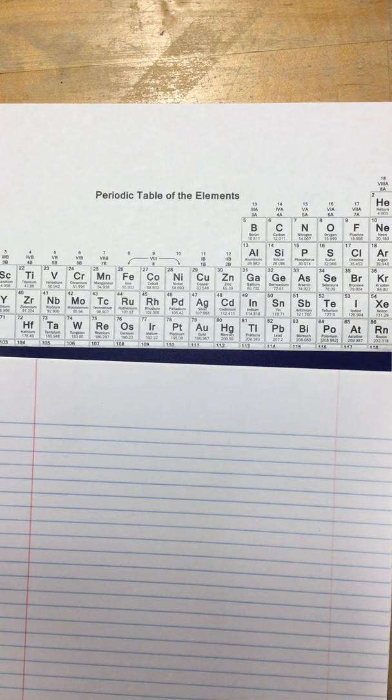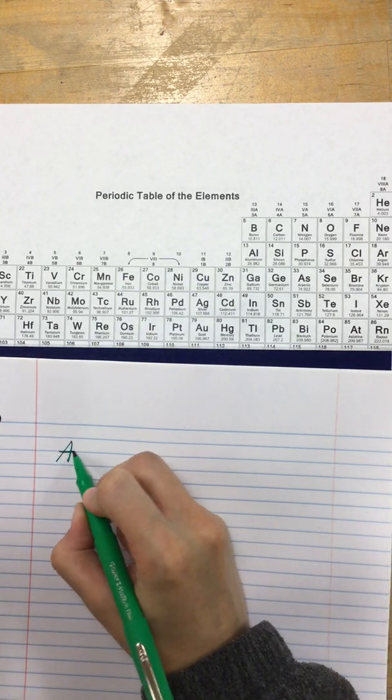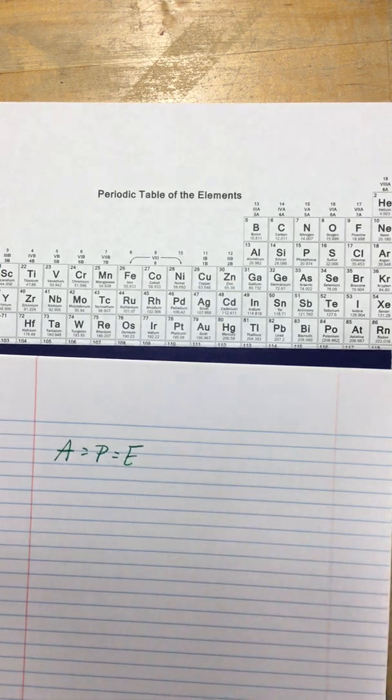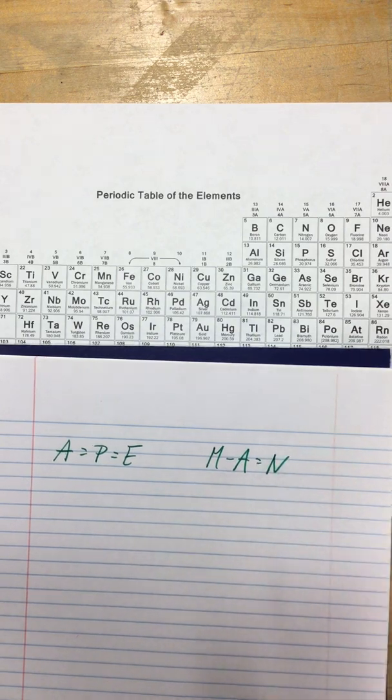Just like always, I need to start first by writing my equation. So I know it's A equals P equals E, ape, man, M minus A equals N.